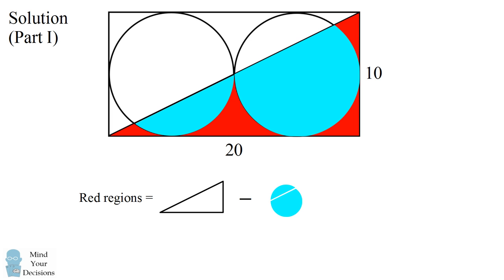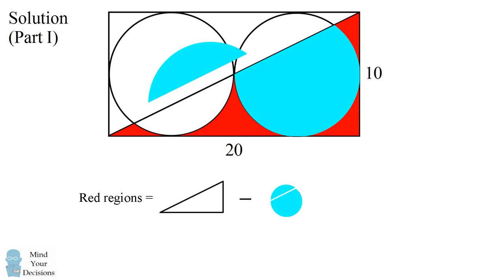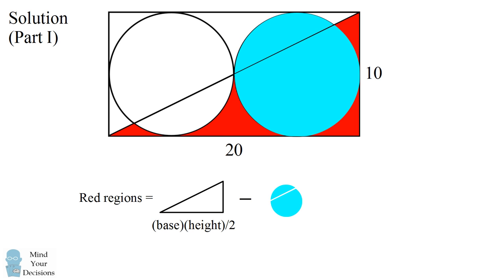minus the area of each of these pieces from the different circles. Now it looks like these two pieces actually join to form one circle. You can notice this by symmetry, and I will illustrate it by putting these two pieces together. We now solve for the area of each piece. The area of a right triangle is its base times its height divided by 2. The area of a circle is pi times r squared.